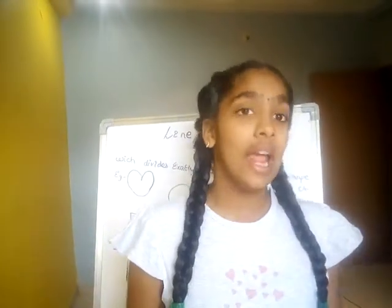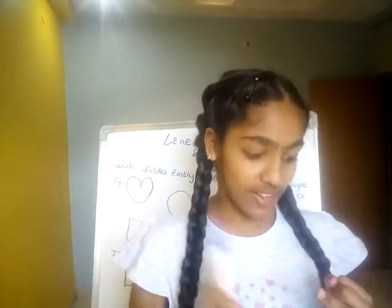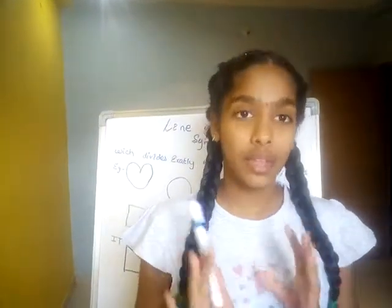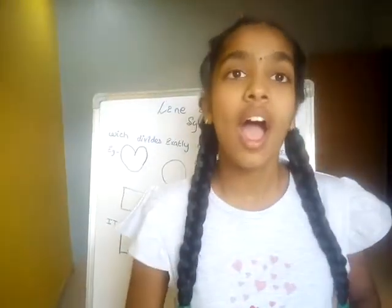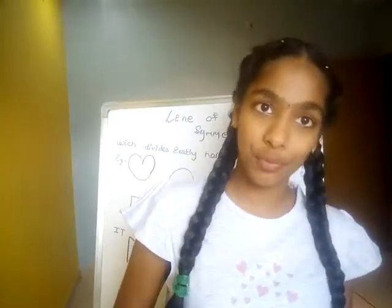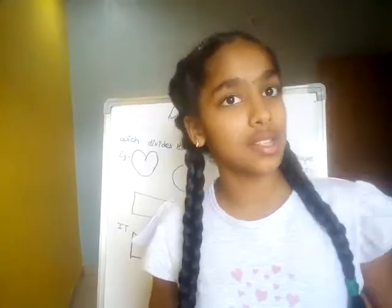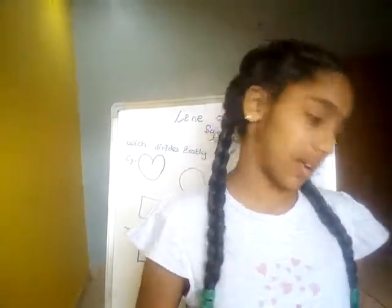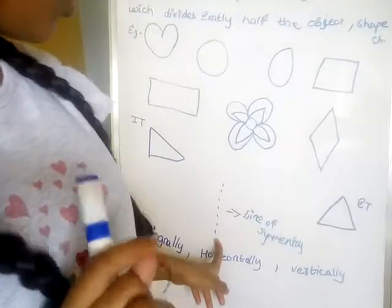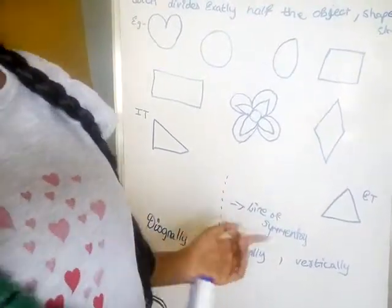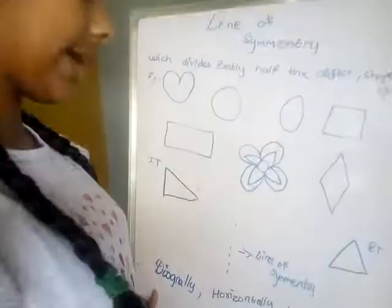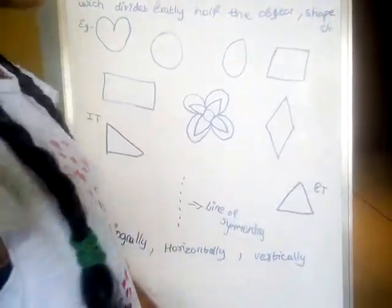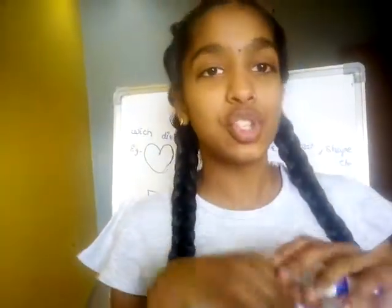We could divide diagonally, horizontally, or vertically — that is how we draw the line of symmetry. So I have some shapes for you. I will show you the line of symmetry. See, this is the line of symmetry. We will mark it with dots or normally we draw a line. We can draw it diagonally, horizontally, or vertically.